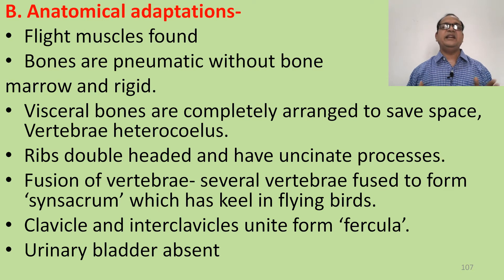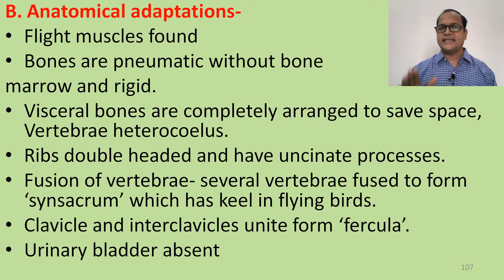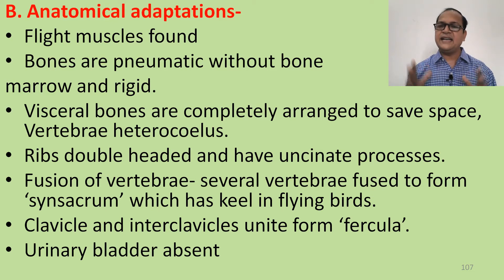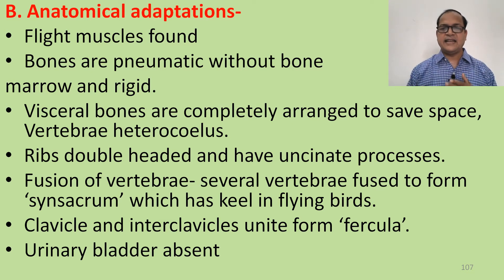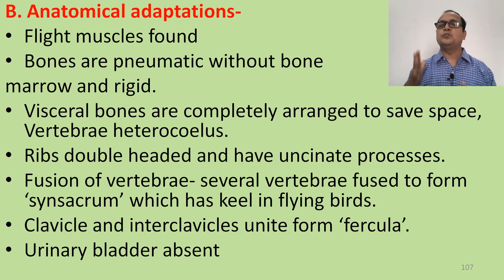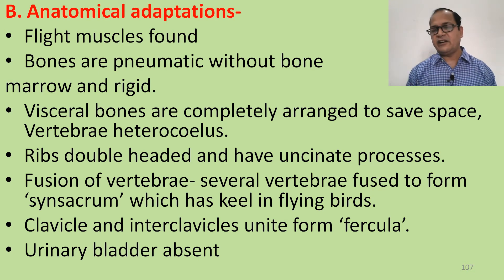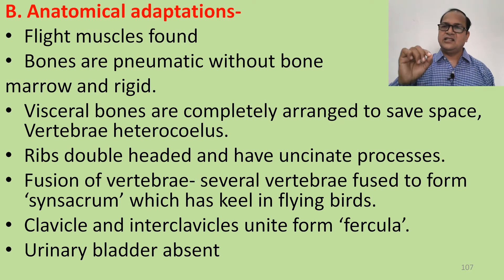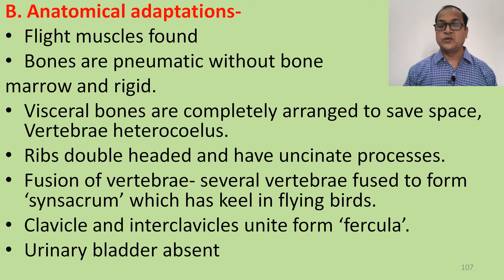Visceral bones are completely arranged to save space. Most vertebrae are fused to form the synsacrum or caudal peduncle. Vertebrae are heterocoelous type — the centrum is saddle-shaped. Ribs are double-headed and have uncinate processes. Several vertebrae fuse to form the synsacrum, which has a keel for flying birds. The keel provides space for thoracic muscle attachment. Clavicles and interclavicles unite to form the furcula; the presence of the furcula is a characteristic feature of birds. The urinary bladder is absent to reduce body weight.